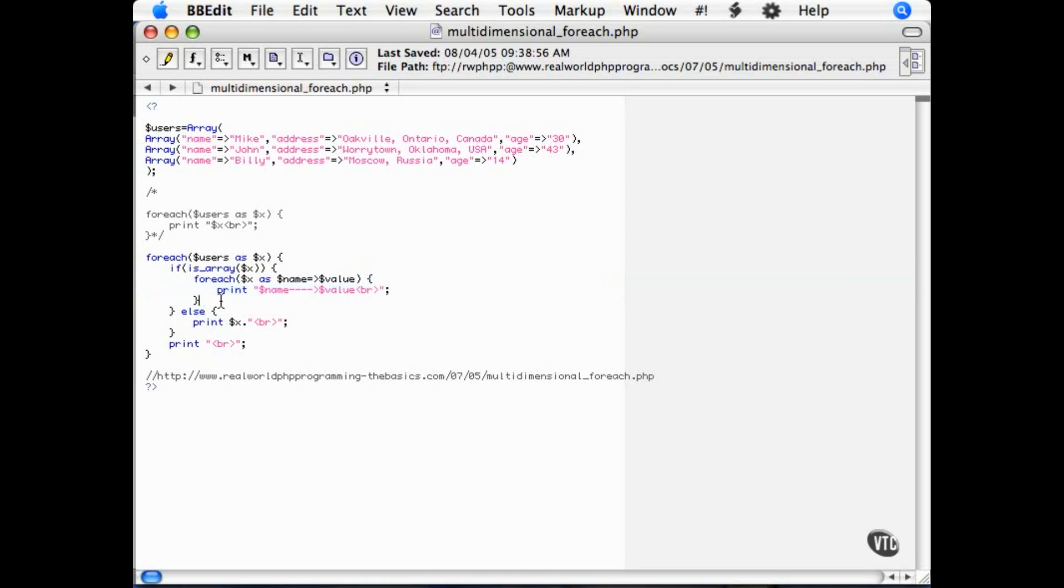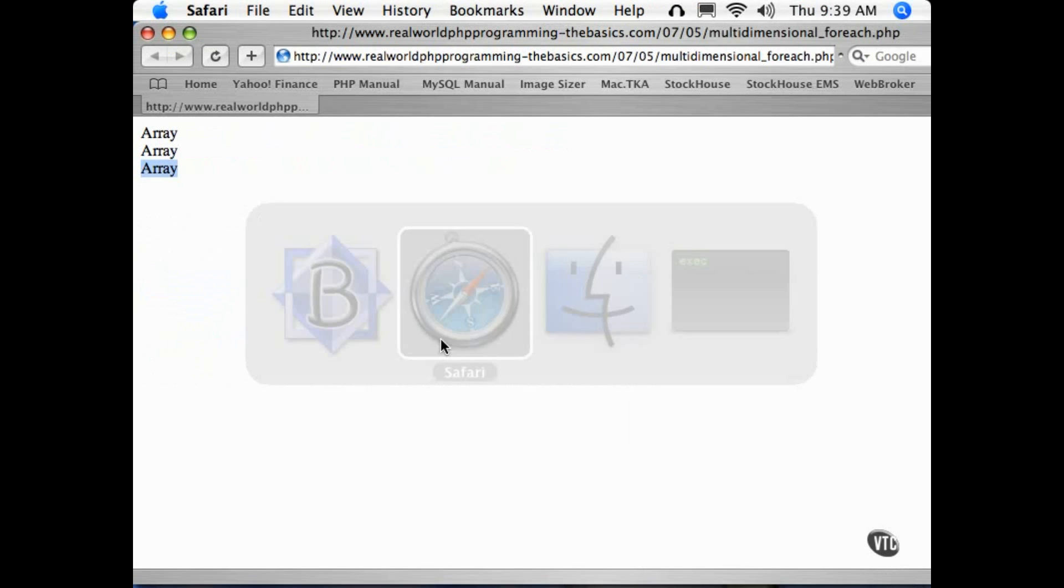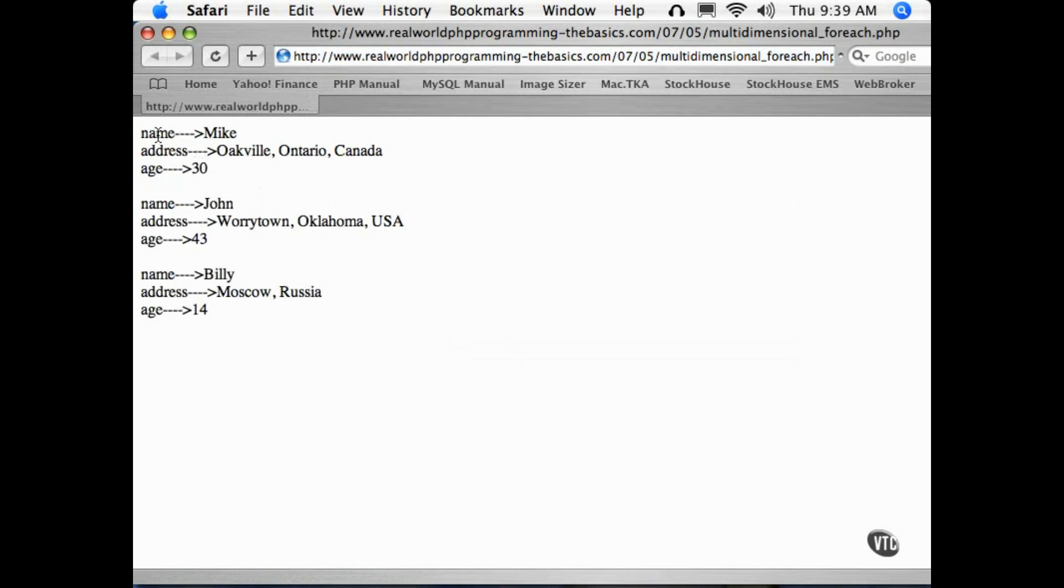Or else, if we find that the type is not an array, then we're just going to print it right out. So we save that, go back, and here we go. Name, value, name, value of each of our elements of our multi-dimensional array.